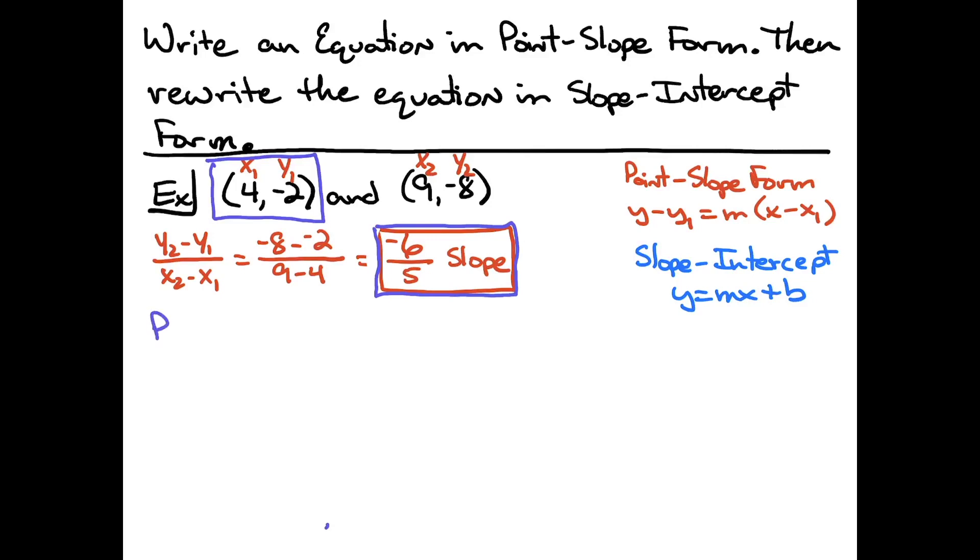So point-slope form is going to be y, and using that first point, the y coordinate is a negative 2. And we remember with point-slope form, when you put it in, you're going to put in the opposite. So I'm going to have a plus 2 is equal to my slope, which is negative 6 over 5 times x. Looking at that x coordinate there, it's 4. So I want the opposite. So minus 4. So there is my point-slope form of the equation.